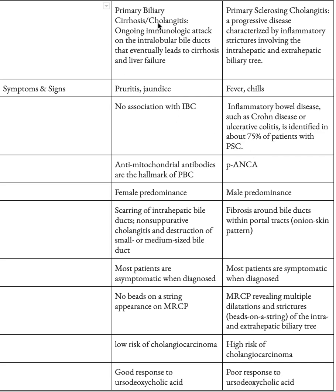Primary biliary cholangitis used to be called primary biliary cirrhosis, but now it is called primary biliary cholangitis. It is an immunologic attack on the intralobular bile ducts that eventually leads to cirrhosis and liver failure. Whereas primary sclerosing cholangitis is a progressive disease characterized by inflammatory strictures involving the intra-hepatic and extra-hepatic biliary tree. Remember these definitions — they help a lot.